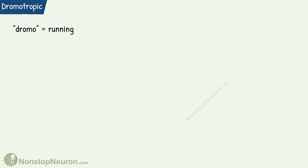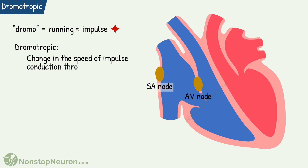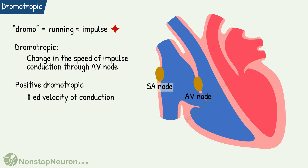Next are dromotropic actions. Dromo means running — and who's running here? The impulse. We know that the impulse is generated at the SA node and passes through the AV node to reach the ventricles. Dromotropic means a change in the speed of this impulse conduction through the AV node. Positive dromotropic means an increase in the velocity of conduction, and negative dromotropic means a decrease in the velocity of conduction.